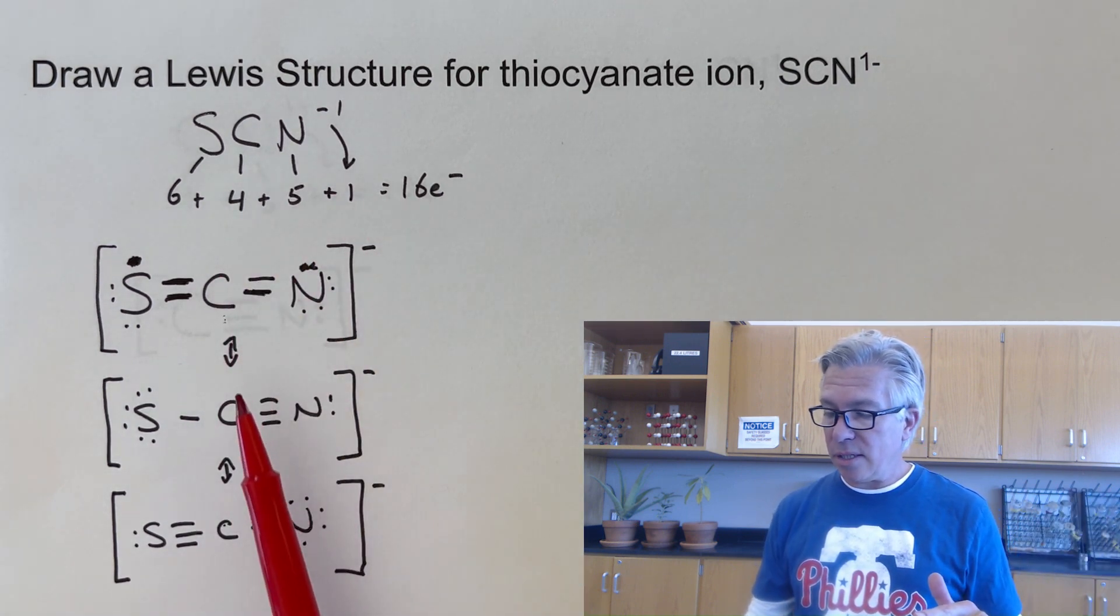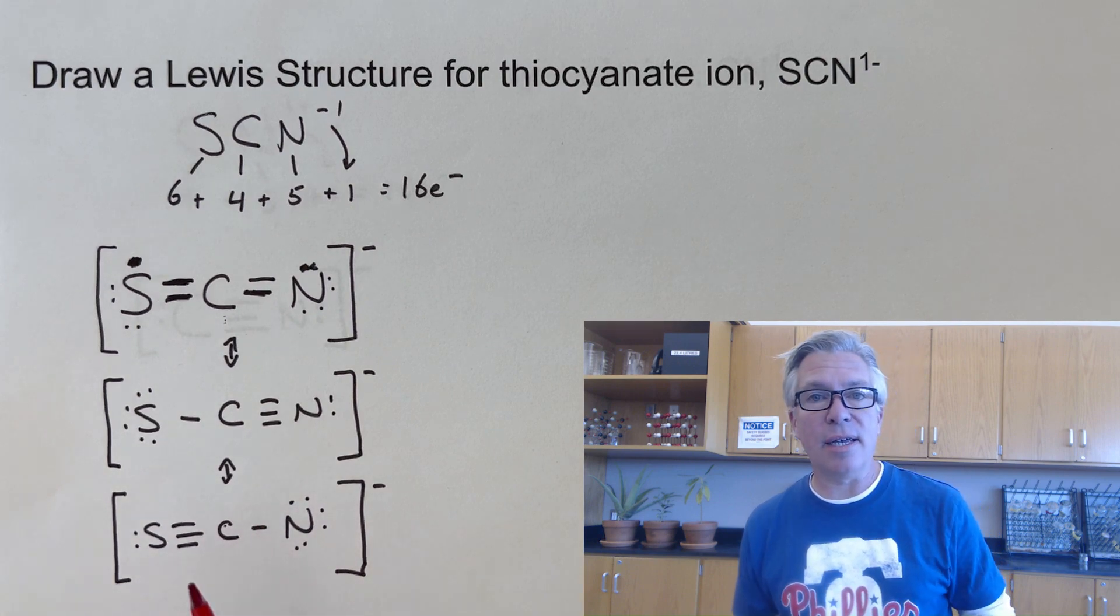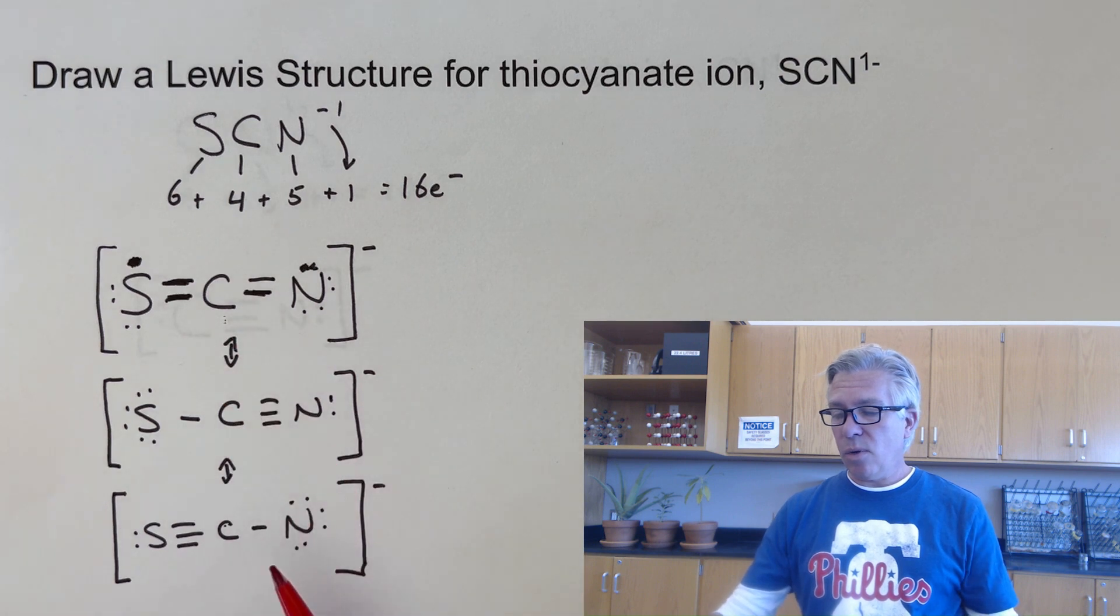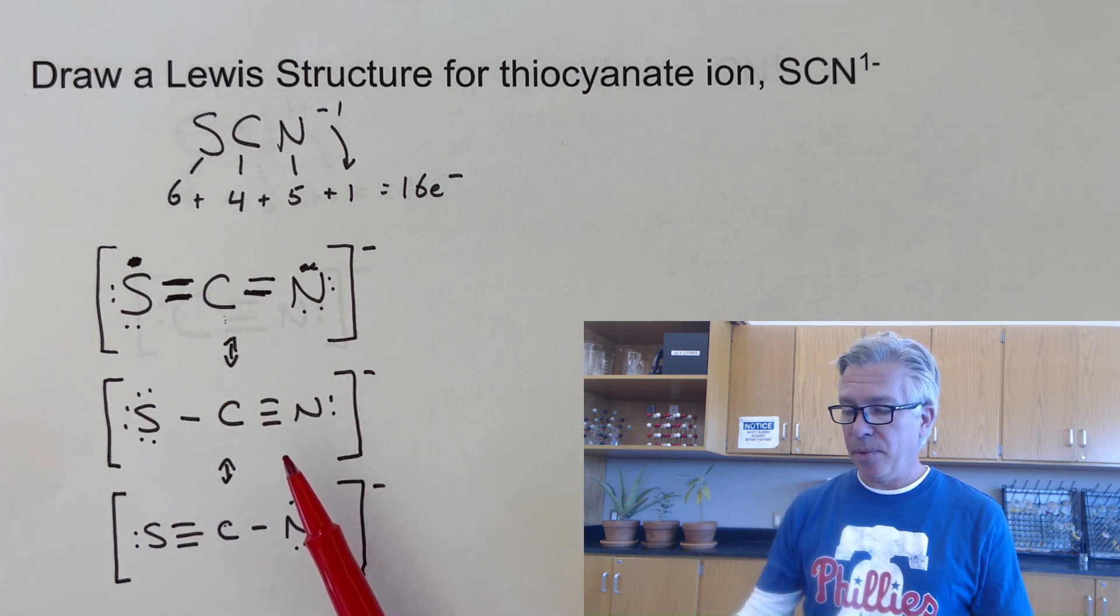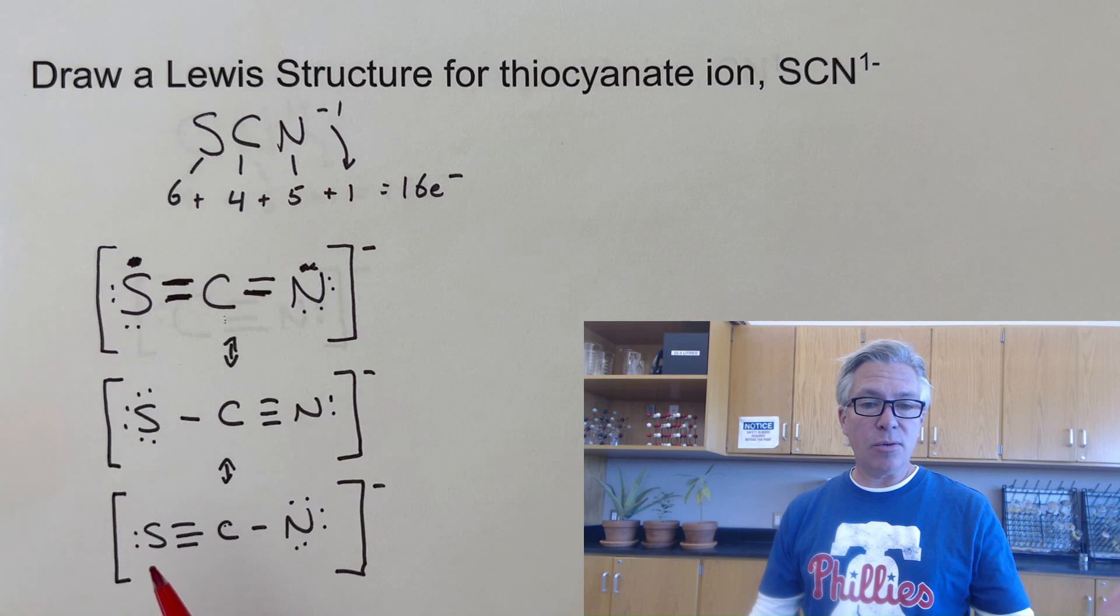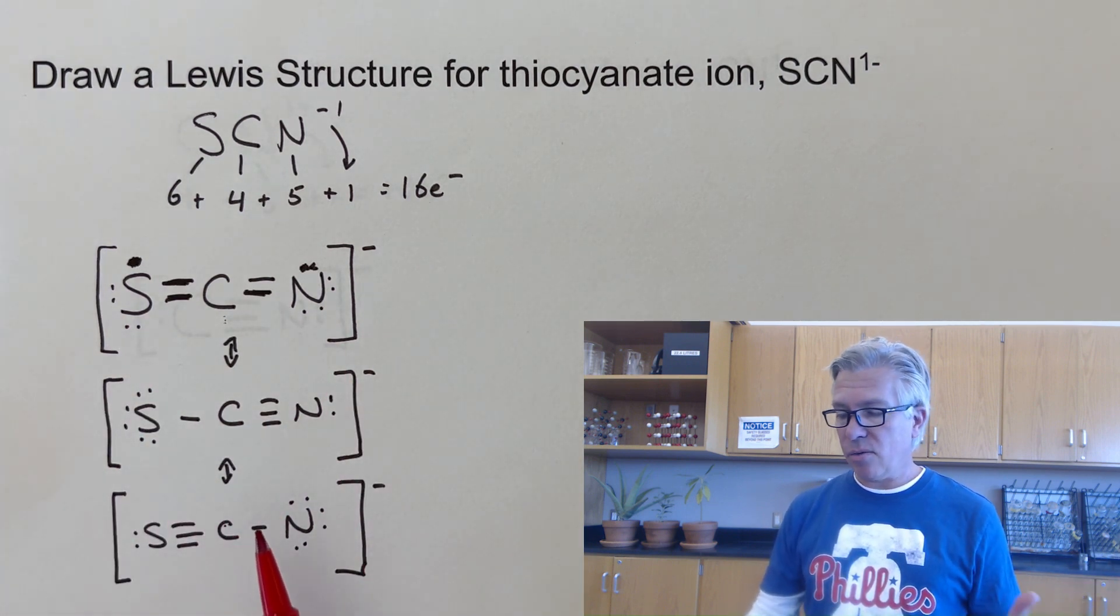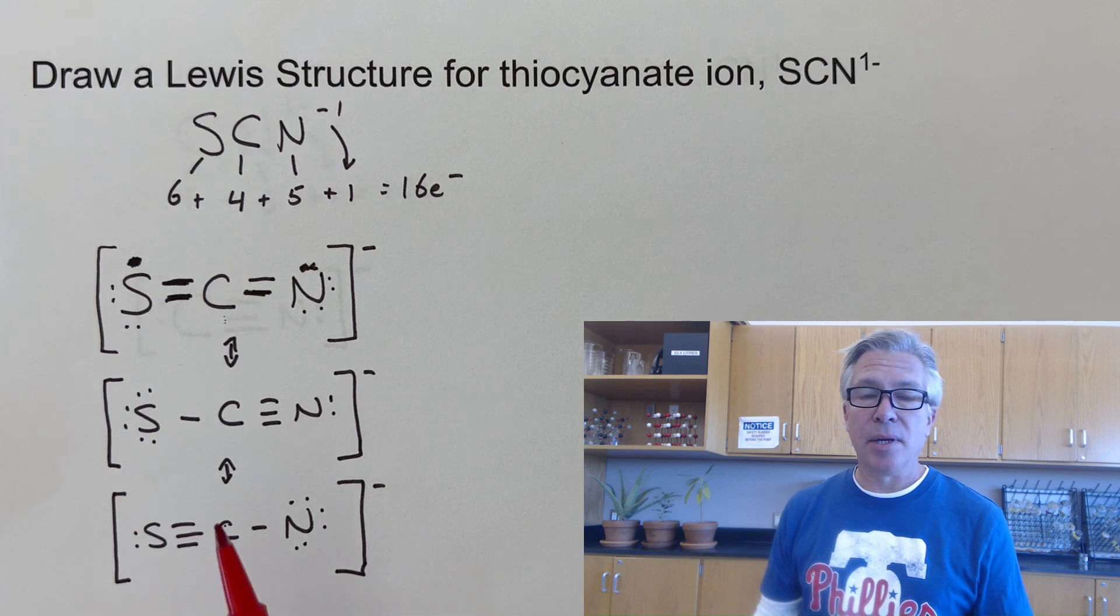But this is the three resonance structures for thiocyanate ion. And in the previous video, we talked about what would be the most likely scenario here. Do all of these exist equally as the bonds and electrons resonate around the molecule, or is one more likely to occur, one more stable?